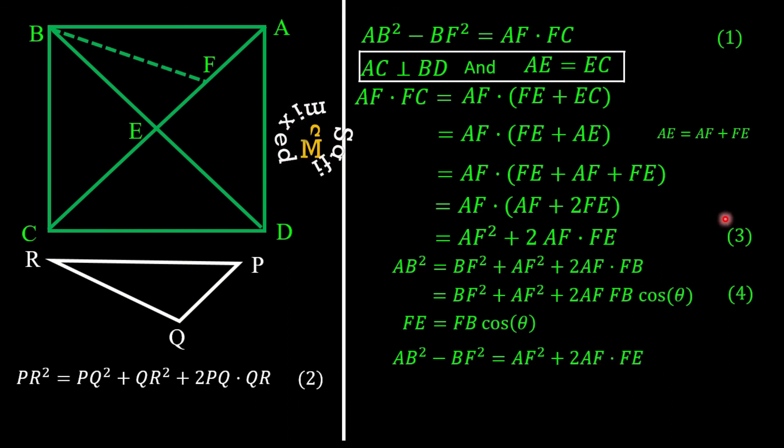Now from equation 3 we see that AF² + 2AF·FE = AF·FC. So I can replace the right side of this equation with AF·FC, that is I can write AB² - BF² = AF·FC. We see with the help of this equation we can find the complete geometry of the square, that is the side length AB, if we know exactly the position of F with respect to vertex A.